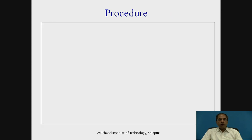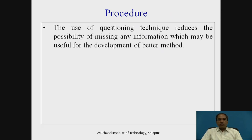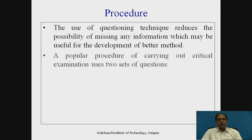What is the procedure for critical examination? The use of a questioning technique reduces the possibility of missing any information useful for developing a better method. It is always said that asking the right question is more difficult than giving the right answer. If you ask a vague question, you get a vague answer; if you ask a specific question, you get a specific answer. We should develop an attitude of asking the right questions at the right time, with a typical flow and technique. A popular procedure is to use two sets of questions.